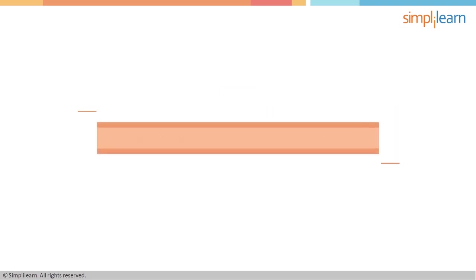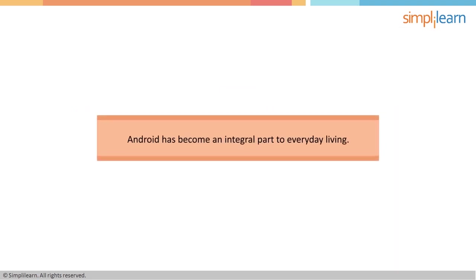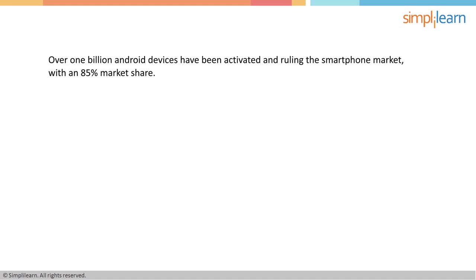Android today: be it a washing machine or a quadcopter, Android has become integral to everyday living in more ways than you can count. Over 1 billion Android devices have been activated. Android rules the smartphone market, enjoying 85% market share.